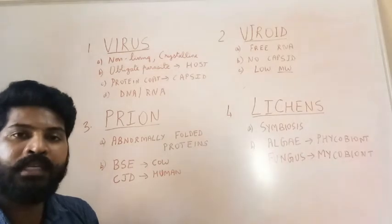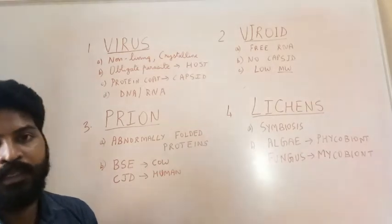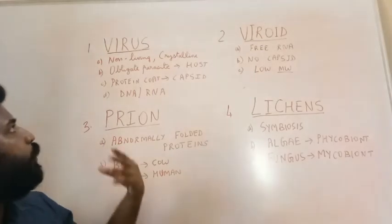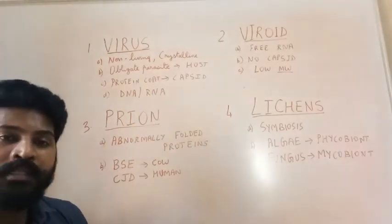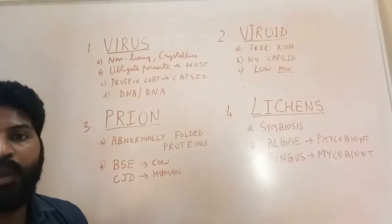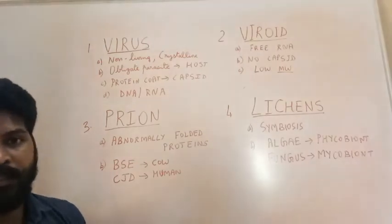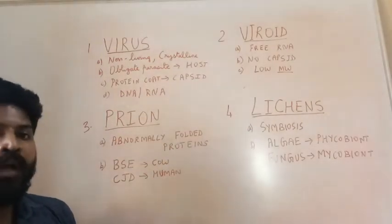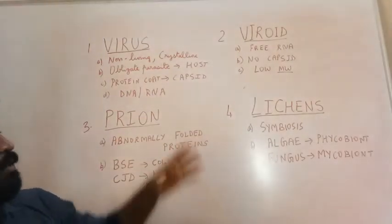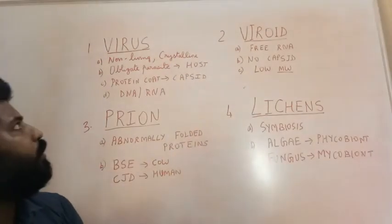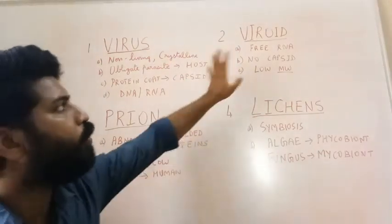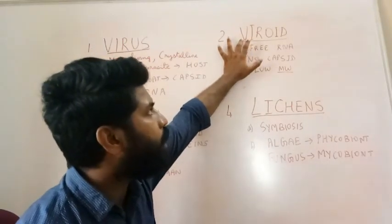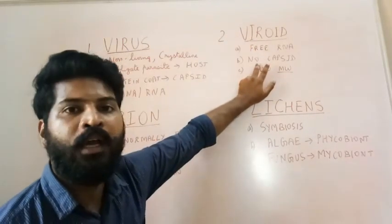The genetic material of the virus inside the capsid could be either DNA or RNA — single-stranded RNA or double-stranded RNA. Viruses are known to cause many diseases in plants and animals. In plants: tobacco mosaic disease. In animals: AIDS, mumps, measles, smallpox, hepatitis, and the coronavirus are all examples of viral diseases.